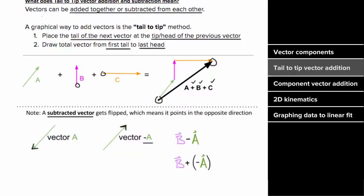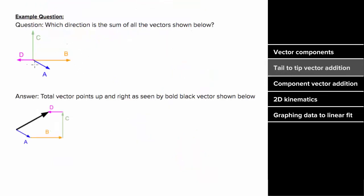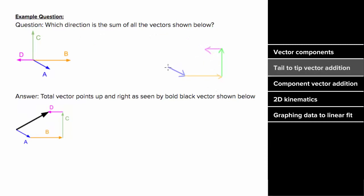So what would an example involving tail-to-tip vector addition look like? Imagine we have these four vectors and we're asked to determine what direction is the sum of all of the vectors. We'll use tail-to-tip vector addition. I'll take vector a, preserving its direction — I'm not allowed to rotate it or change its size — and add vector b by putting the tail of vector b to the tip of vector a. Then add vector c by putting the tail of vector c to the tip of vector b. And finally add vector d by putting the tail of vector d to the tip of vector c. Now that we've drawn all our vectors, the total vector goes from the tail of the first vector to the tip of the last vector, which means this is the direction and magnitude of the total vector a plus b plus c plus d.